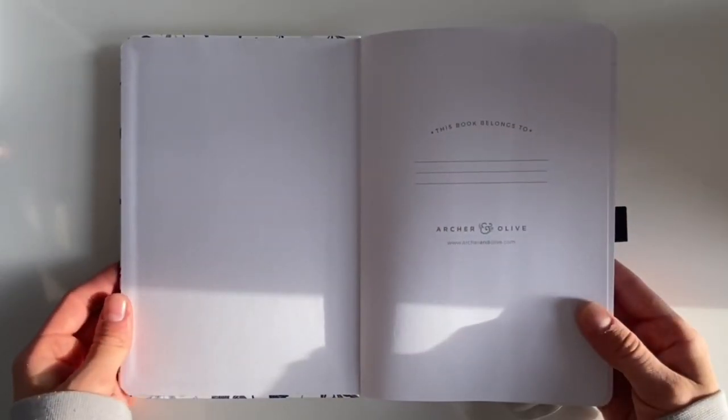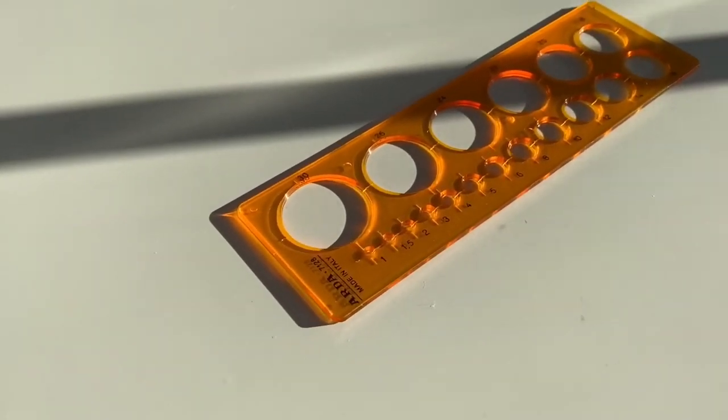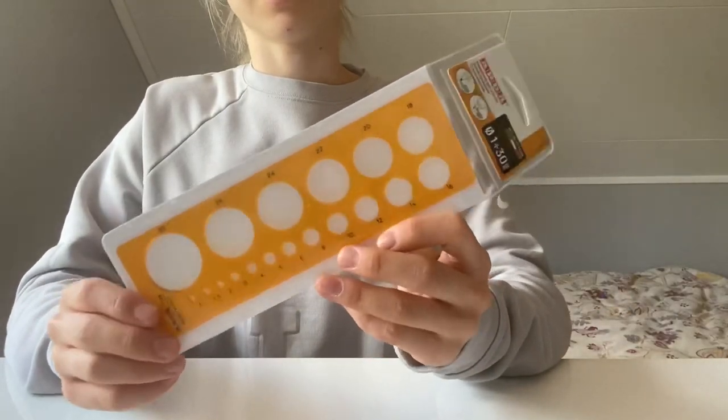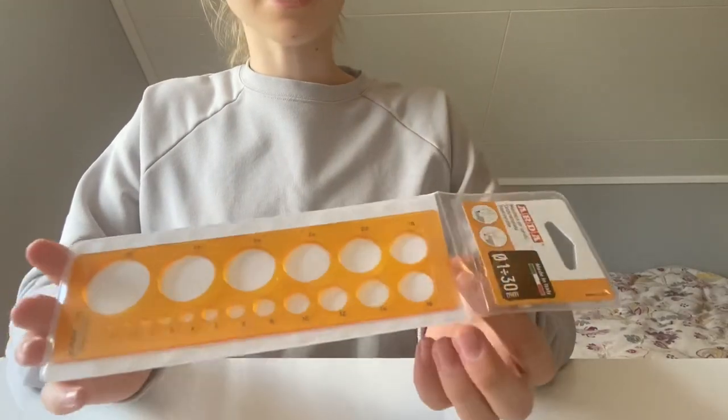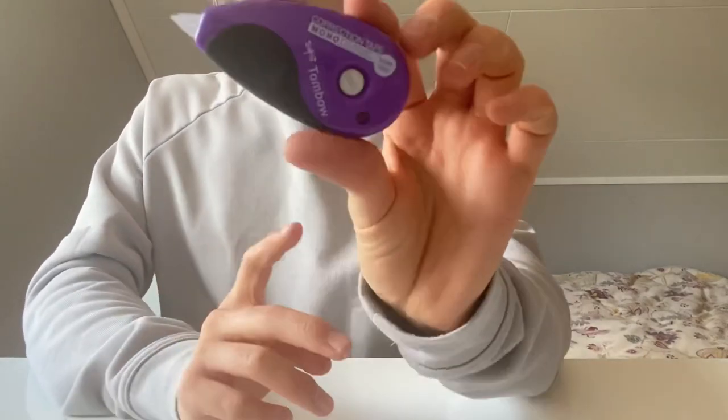I got this one from Tidformera. The next thing I also got from Tidformera is this circle stencil and it has a bunch of different circles in different sizes. The next thing is also from Tidformera and it's the Tombow Mono correction tape.